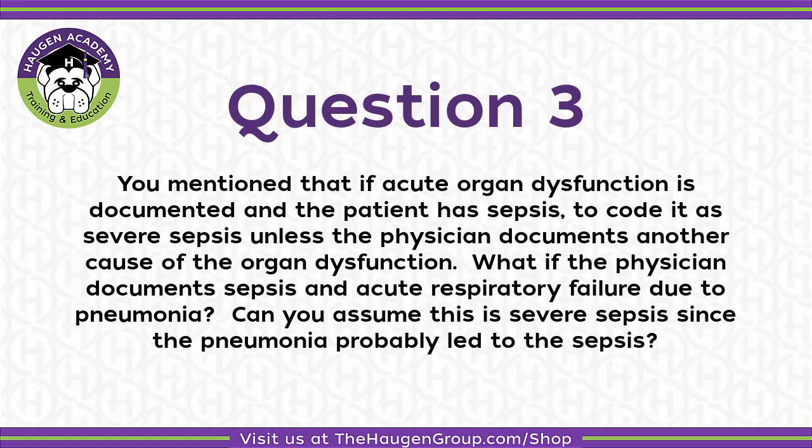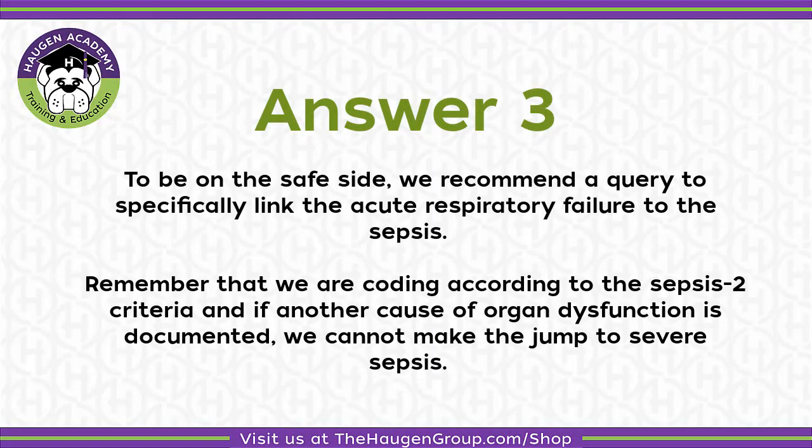During the live event, you mentioned that if acute organ dysfunction is documented and the patient has sepsis, to code it as severe sepsis unless the physician documents another cause of the organ dysfunction. What if the physician documents sepsis and acute respiratory failure due to pneumonia? Can you assume this is severe sepsis since the pneumonia probably led to the sepsis? This is a tricky one. To be on the safe side, we recommend a query to specifically link the acute respiratory failure to the sepsis. Remember that we are coding according to the Sepsis 2 criteria, and if another cause of organ dysfunction is documented, we cannot make the jump to severe sepsis.